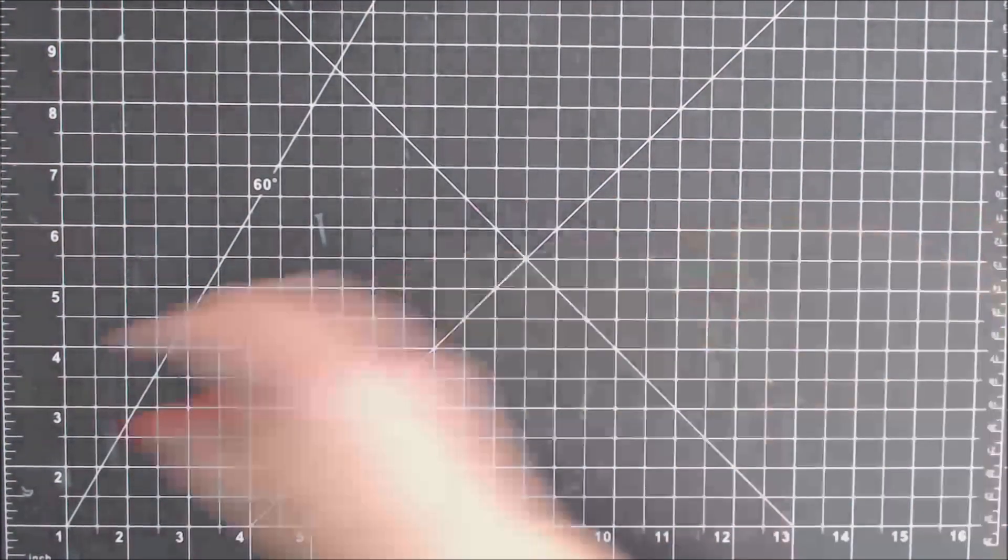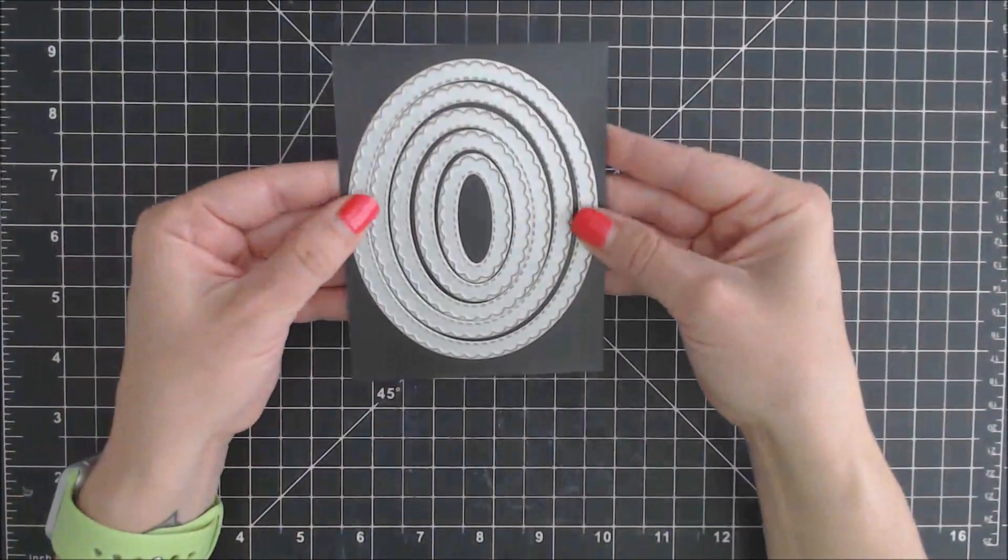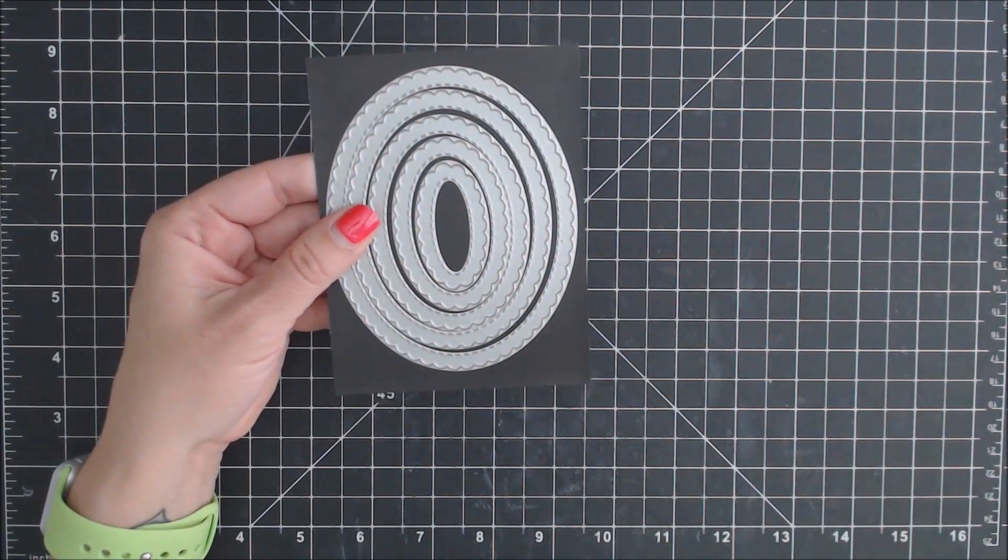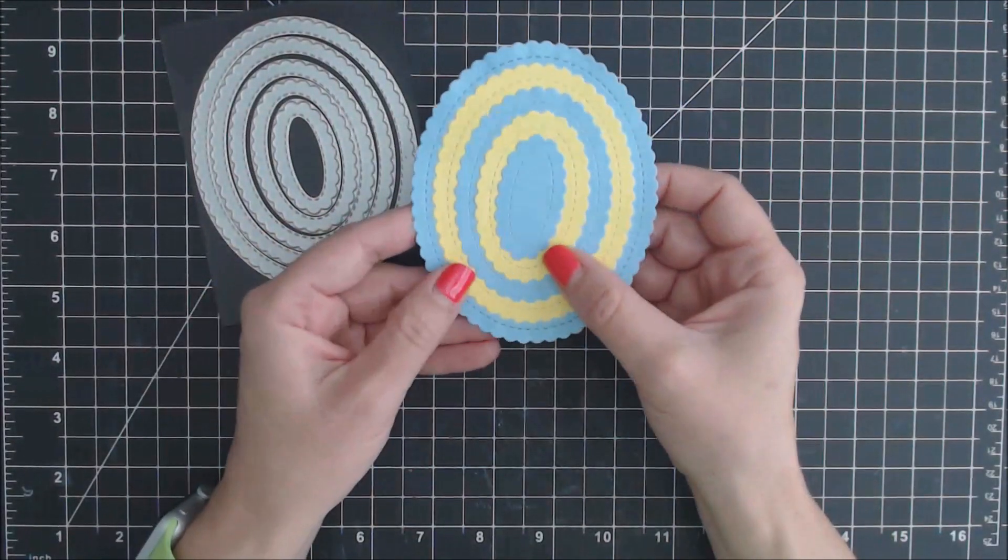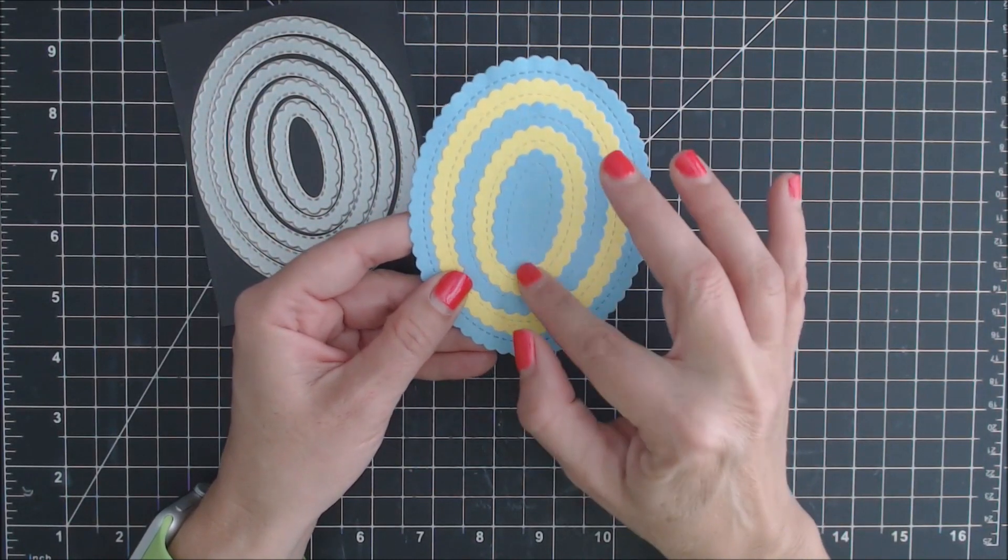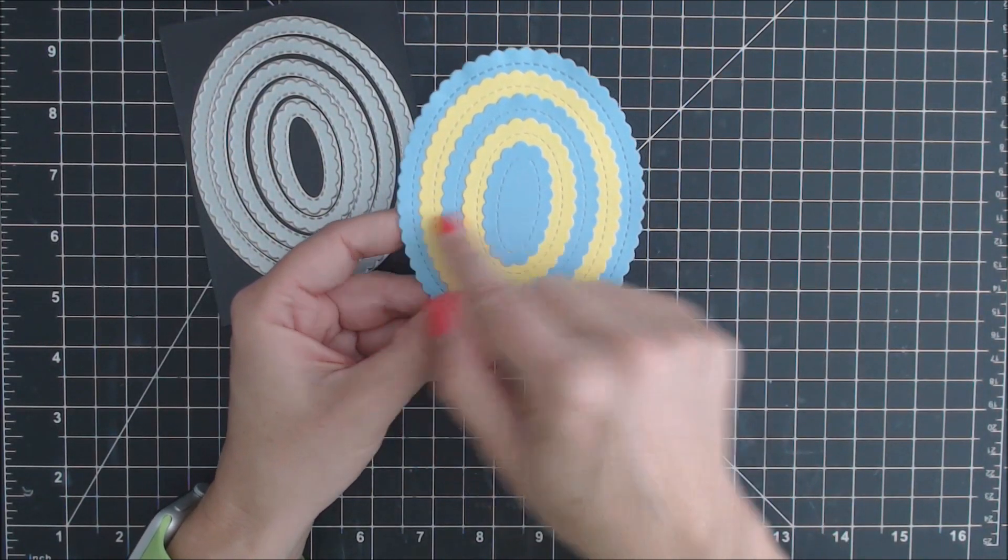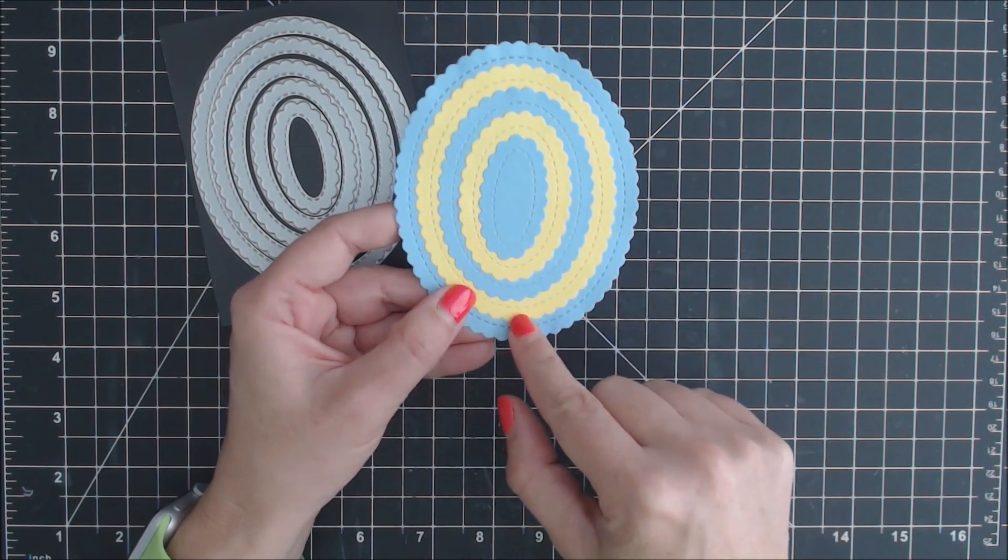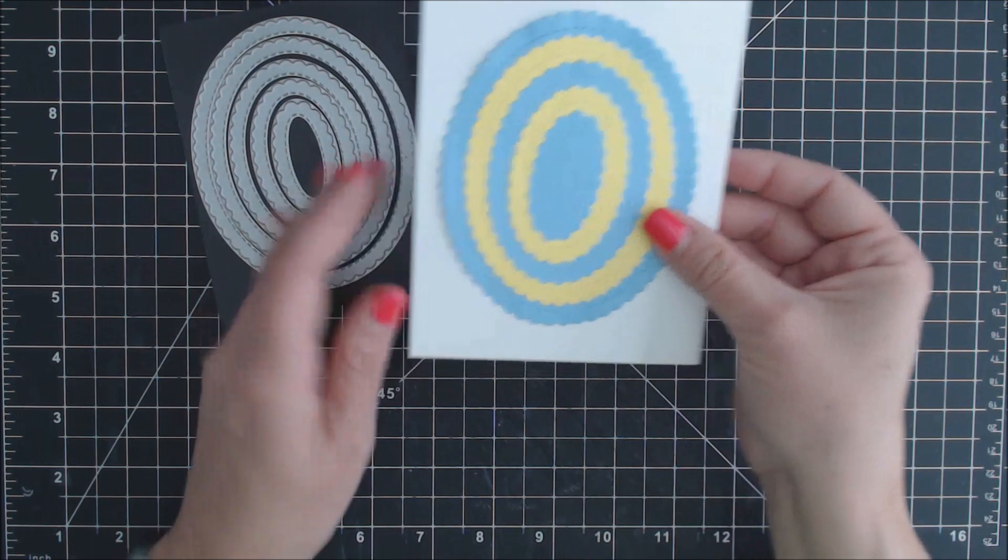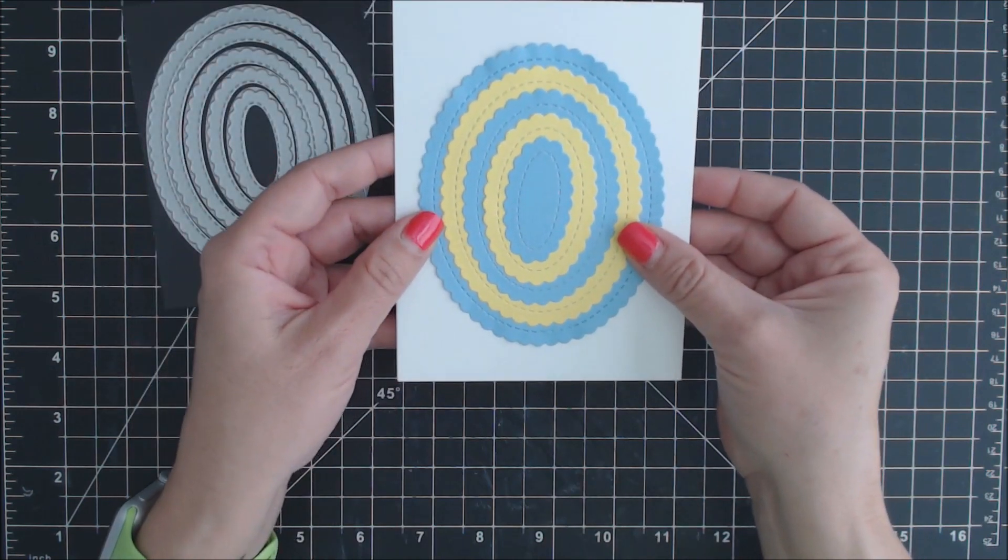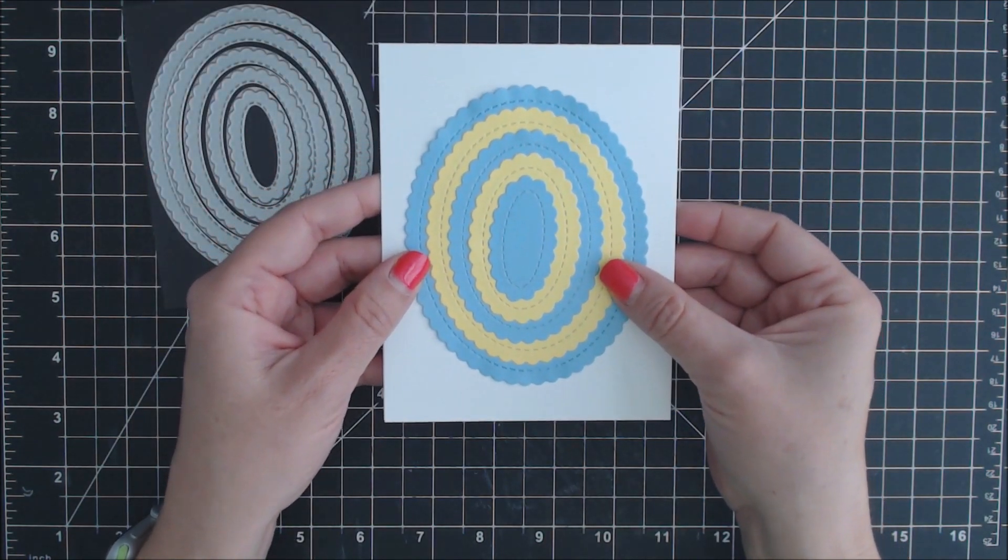Next up we have the oval dies. This set contains five different dies. Here they are cut out. The sizes range from one inch to one and seven eighths inch, and three and a half to four and three eighths of an inch. Here's how it looks on a normal typical size card base, great focal point for the card.